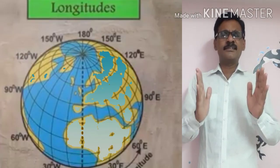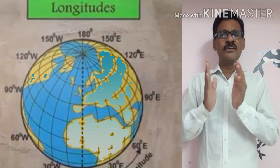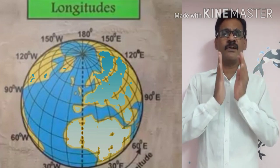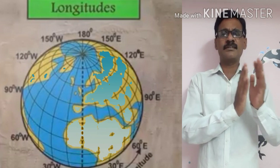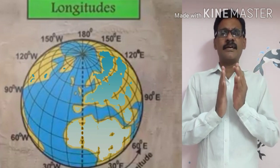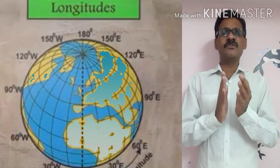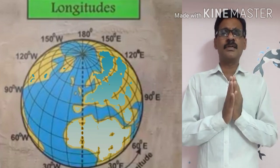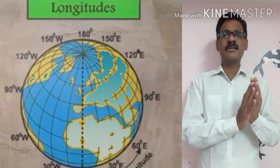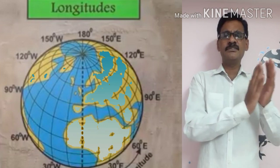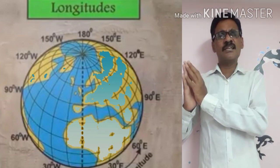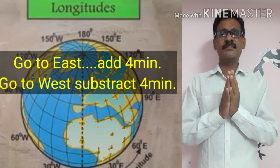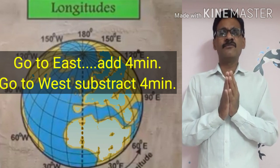When we move from west to east from one longitude to the next, the time is increased by 4 minutes. When we move from east to west, the time will be subtracted by 4 minutes.